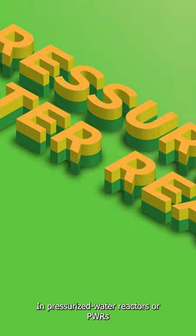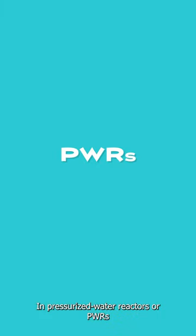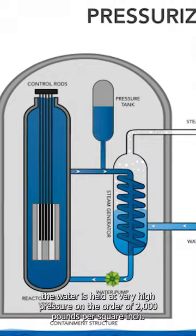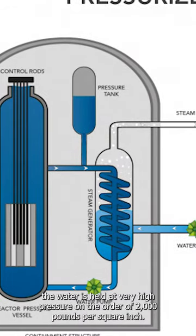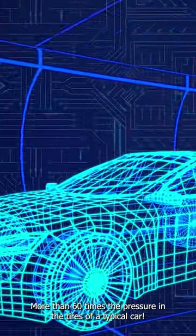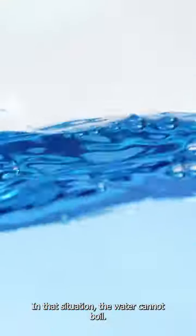In pressurized water reactors, or PWRs, the water is held at very high pressure, on the order of 2,000 pounds per square inch, more than 60 times the pressure in the tires of a typical car. In that situation, the water cannot boil.